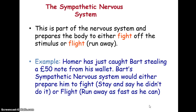Here's a little example. Homer has just caught Bart stealing a £50 note from his wallet. The sympathetic nervous system would either prepare him to fight — stay and say he didn't do it — or flight — run away as fast as he can. It's really useful to use different kinds of examples when trying to explain quite difficult concepts.